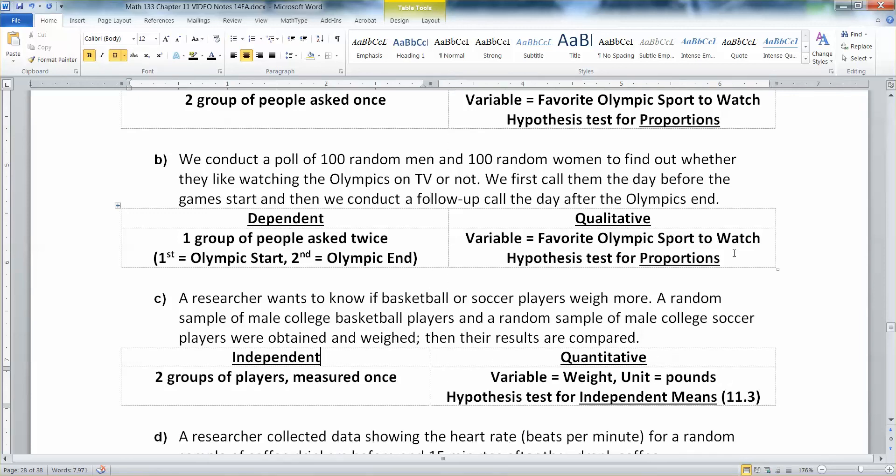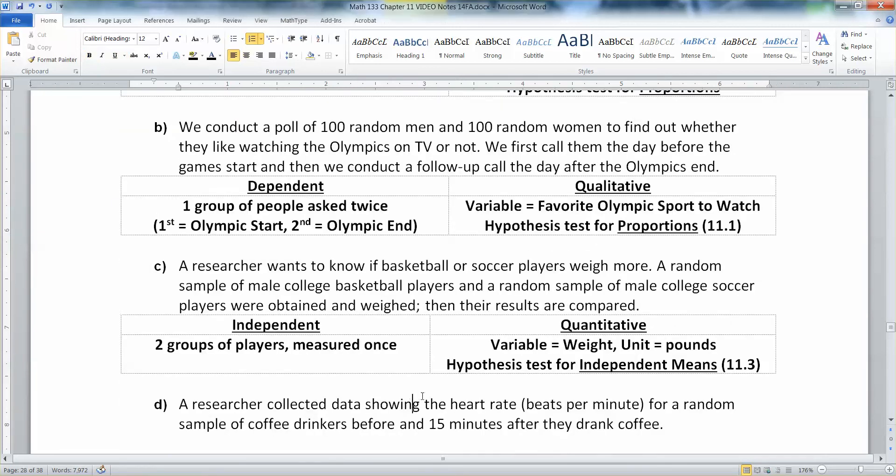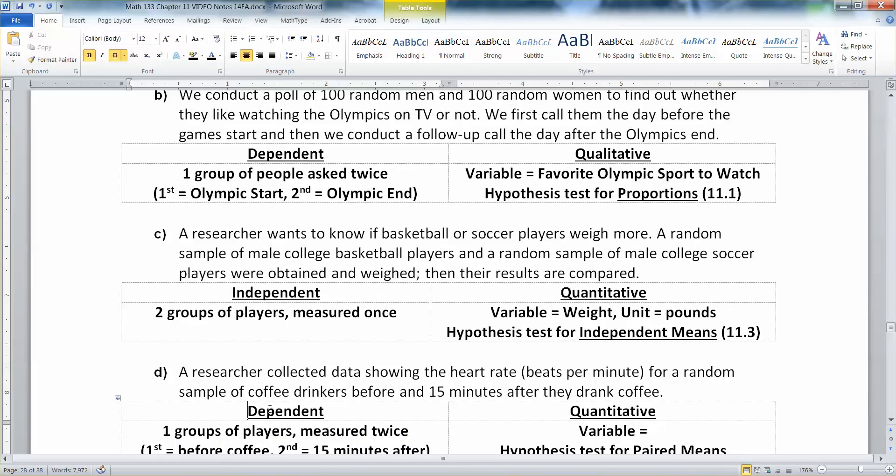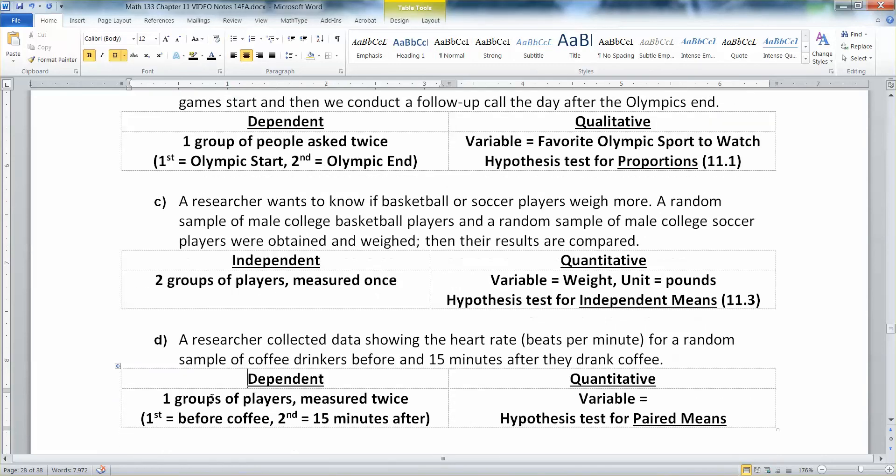Now, what about the next one? A researcher has collected data showing the heart rate beats per minute for a random sample of coffee drinkers before and 15 minutes after they drank their coffee. Well, that's classic dependent. It's a before and after, right? So you have one group of coffee drinkers and you measure them twice.